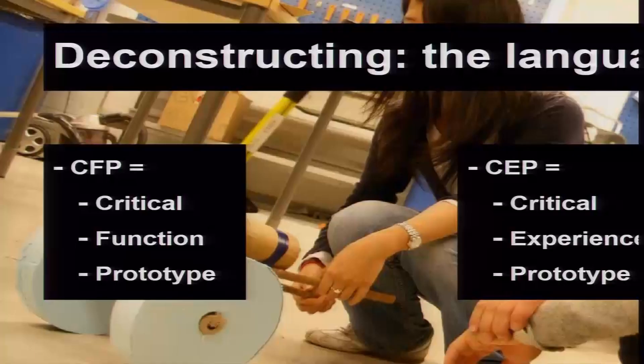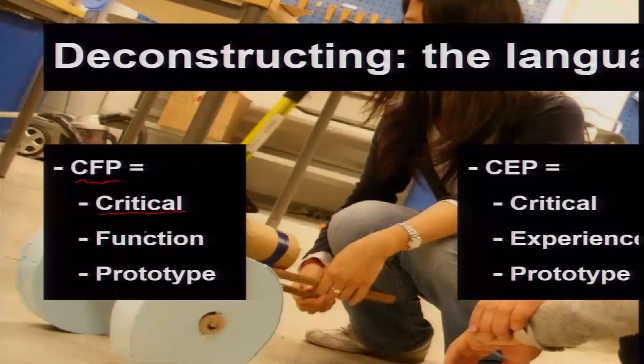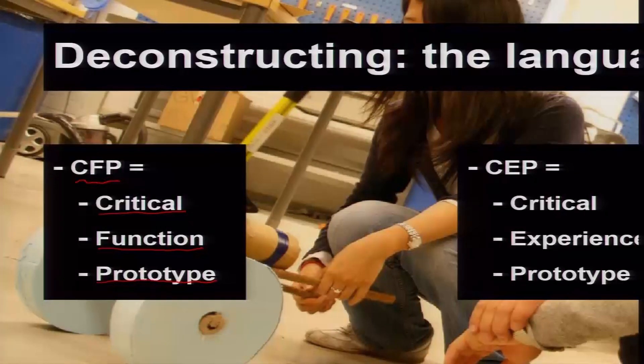There are many different kinds of prototypes which people construct in product design activity. Some of them include the functional prototype, also known as the CFP or Critical Functional Prototype, where whatever is the main idea or theme has been constructed in full with the functionality that is envisioned for the particular product.